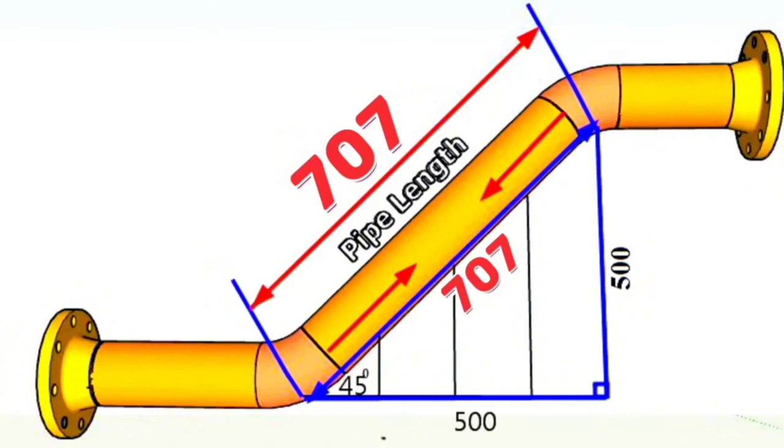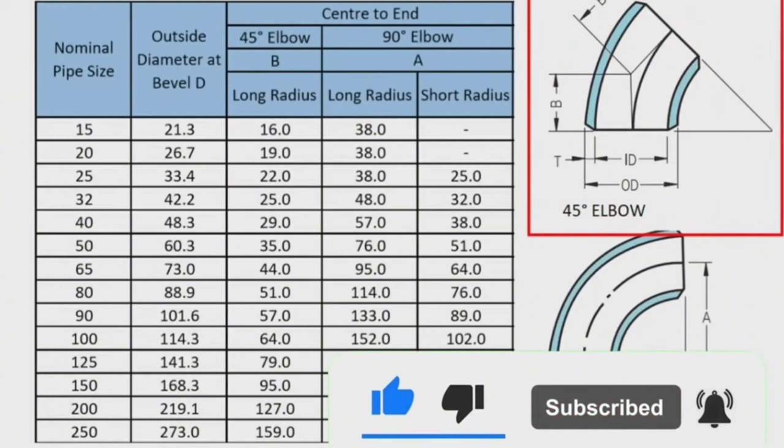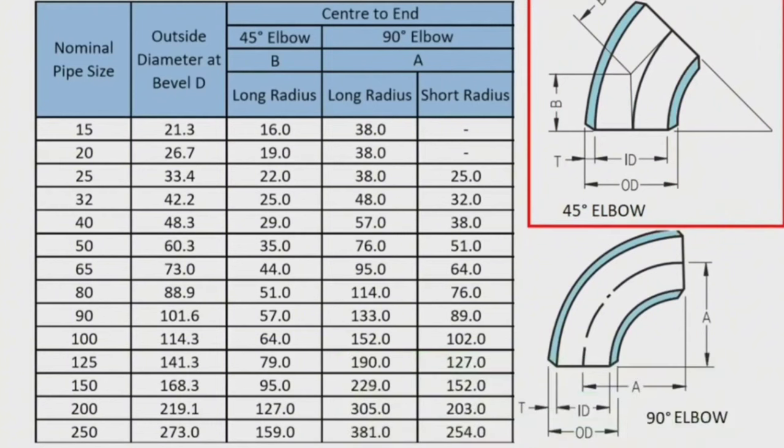Let's look at the standard size chart of elbows. This table shows the dimensions of the most commonly used 45-degree and 90-degree elbows in pipe fabrication. In this table, you can easily find the dimensions of 45-degree and 90-degree long radius and short-radius elbows.